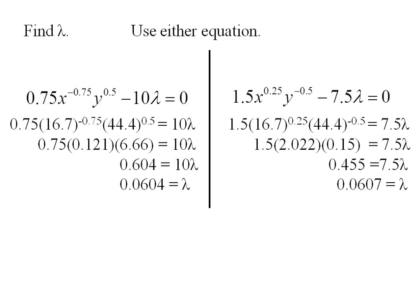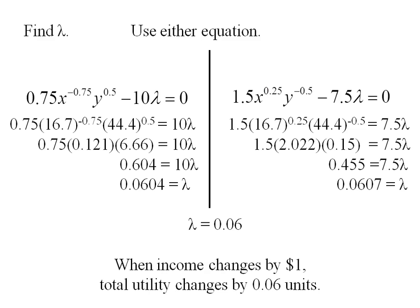Now, the difference here is due to rounding, so really we might just say lambda is 0.06. This means when income changes by $1, total utility changes by 0.06 units.